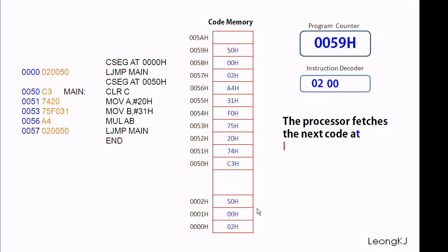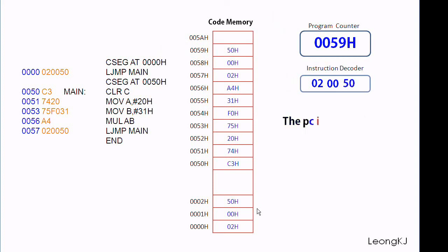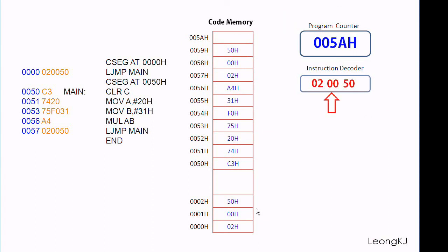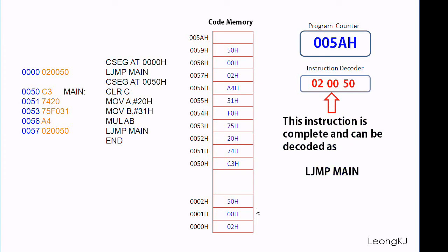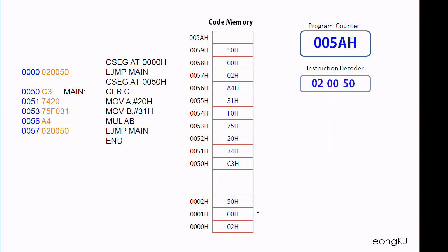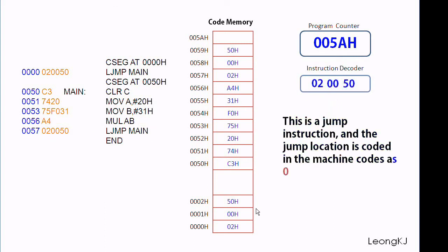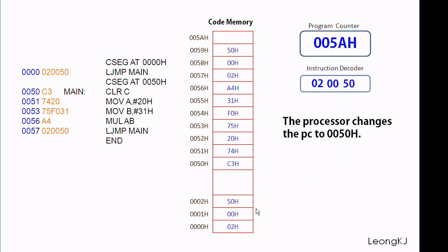The processor fetches the next code at location 0059. The PC is incremented by 1. This instruction is complete and can be decoded as LJMP main. This is a jump instruction and the jump location is coded in the machine code as 0050. The processor changes the PC to 0050.